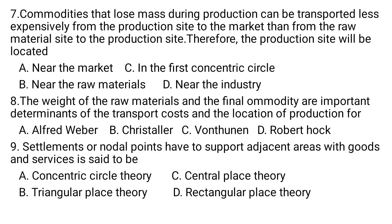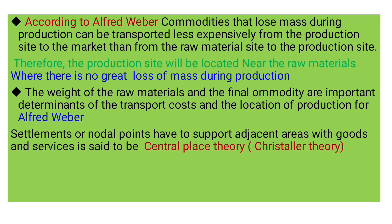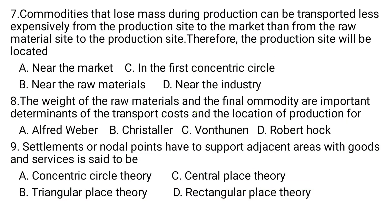Question number seven: Production can be transported less expensively from the production site to the market than from the raw material site to the production site. Therefore, the production site will be located: A) near the market, B) near the raw materials, C) in the first concentric circle, D) near the industries. According to Weber, commodities that lose mass during production are produced near the raw materials. The correct answer is B.